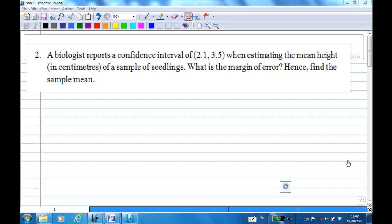The problem is this: a biologist reports a confidence interval of 2.1 to 3.5 when estimating the mean height in centimeters of a sample of seedlings. What is the margin of error? Hence find the sample mean.